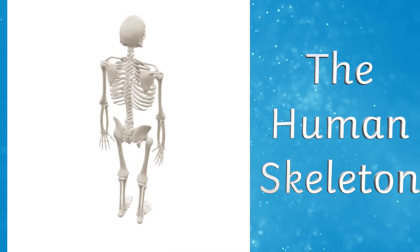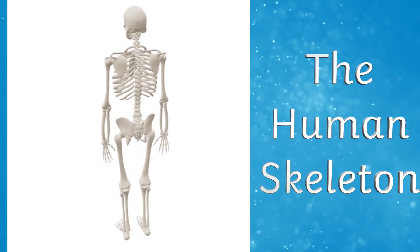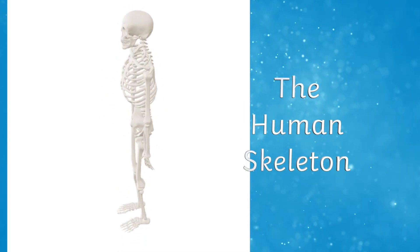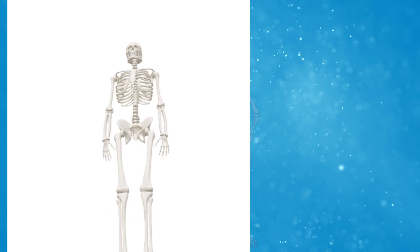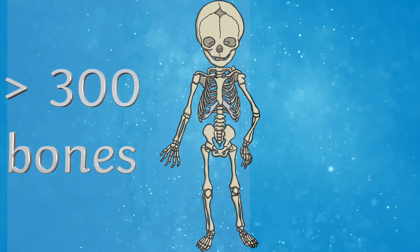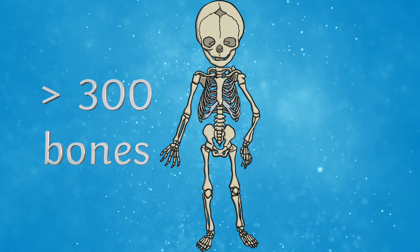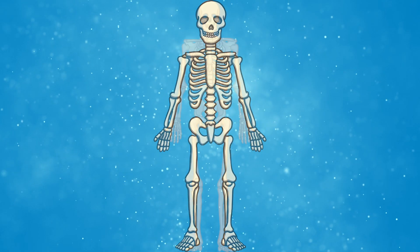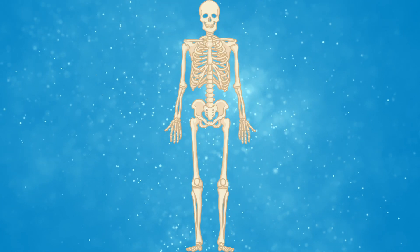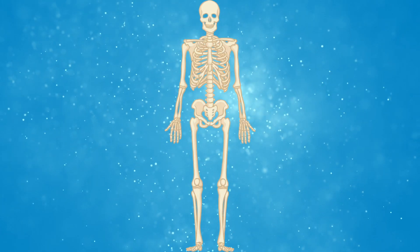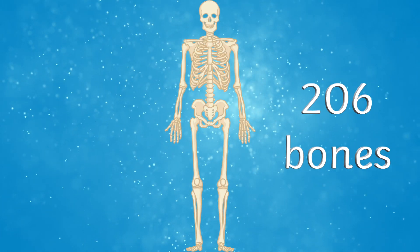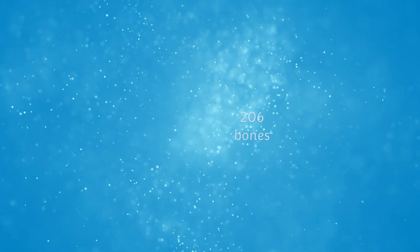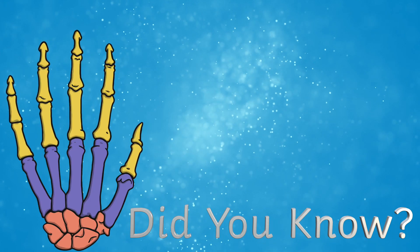This skeleton is made up of living bones and it grows as we grow. A baby's skeleton has more than 300 bones, but as we grow some of these fuse together. By the time we are adults, the average human has 206 bones. Did you know that over half of these are in the hands and feet?